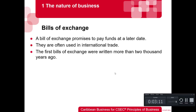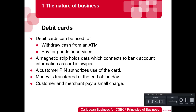Debit and credit cards are very prevalent today. Most bank ATM cards are now debit cards, allowing you to pay for goods locally or overseas by swiping your card. The key difference is that a credit card uses the bank's money — it's like a loan, and the bank charges you interest. A debit card, on the other hand, uses your own money deducted directly from your savings account.